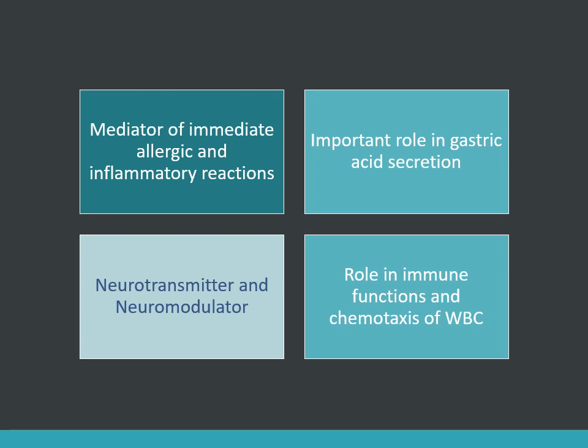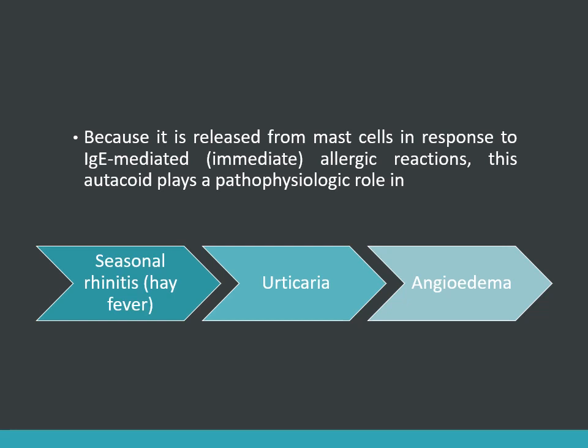Histamine also plays an important role in gastric acid secretion. The enterochromaffin-like cells found in the stomach stimulate parietal cells, and histamine is released, contributing to gastric acid secretion. Histamine also functions as a neurotransmitter and neuromodulator, and it has a role in immune functions and chemotaxis of WBCs. Histamine has four main functions.